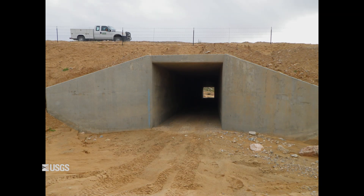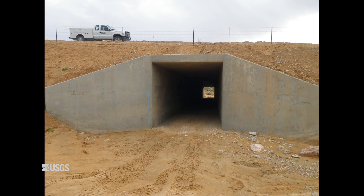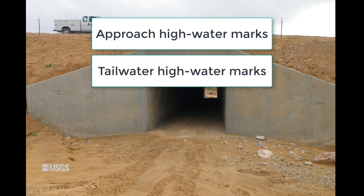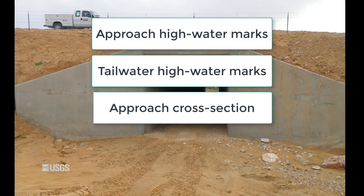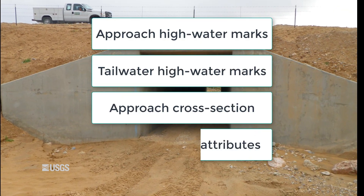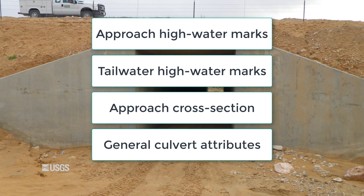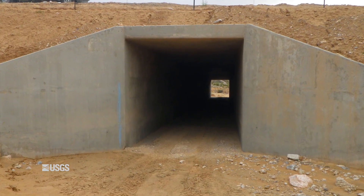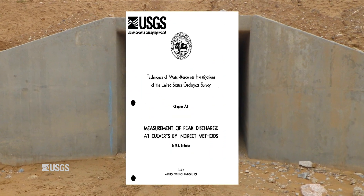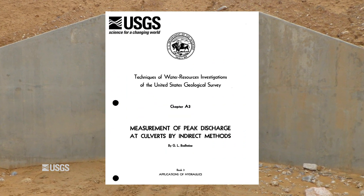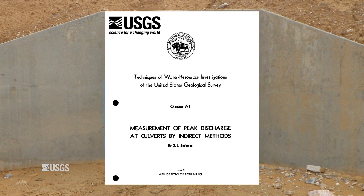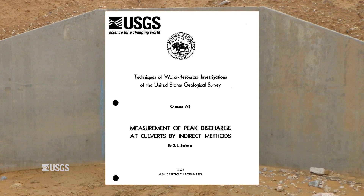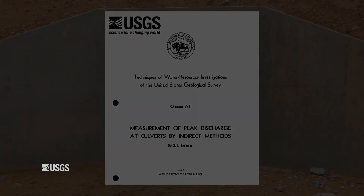In previous videos, I discussed surveying the approach high watermarks, the tailwater high watermarks, an approach cross section, and the general attributes of any culvert. The information presented in this single component video can also be found in TWRI-3-A3, measurement of peak discharge at culverts by indirect methods.